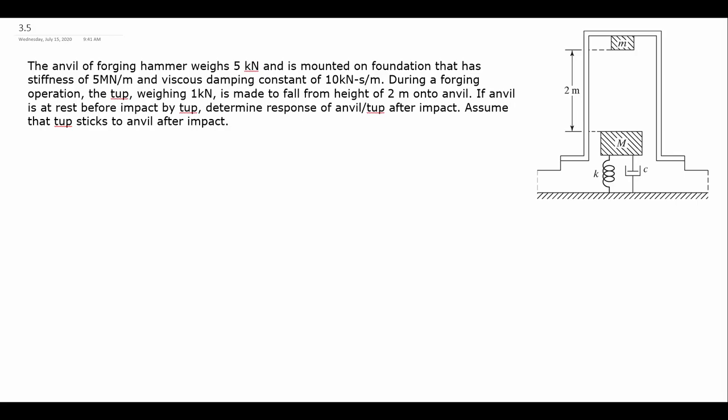In this problem, we see another anvil impact, but in this case, we're going to have both a spring and a damper involved in the oscillations after the top impacts the anvil. Our ultimate goal is to find the position of this anvil and top after they combine, after the impact. We want to know their position at all points in time after that impact — x of t — and we'll see in the diagram how x of t is defined.